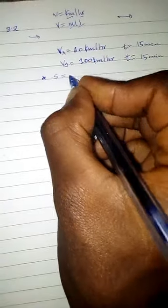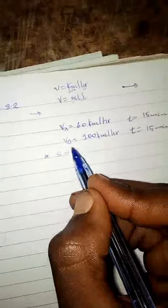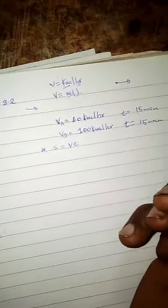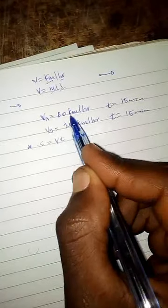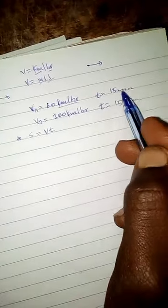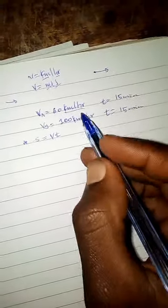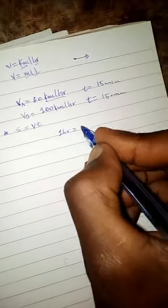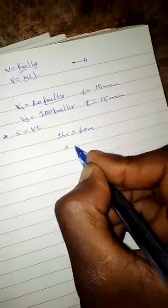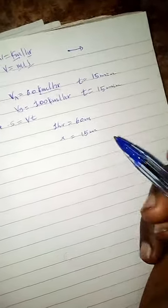Let's convert 15 minutes to hours using cross multiplication. One hour equals 60 minutes, so x hours equals 15 minutes. Cross multiplying: 1 times 15 equals 60 times x, giving us x equals 15 over 60, which equals 1/4 hour.